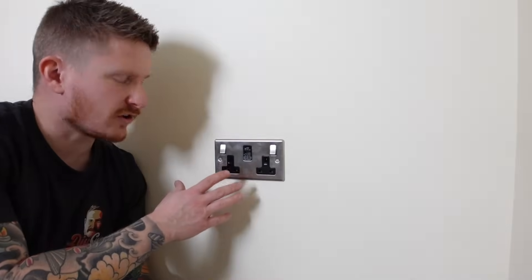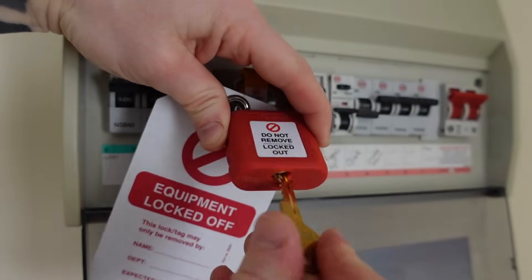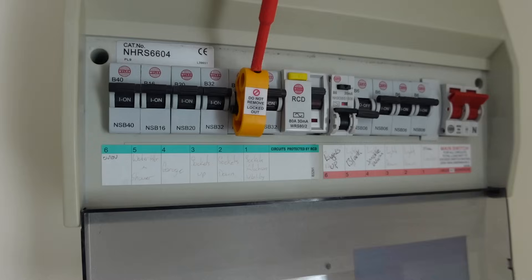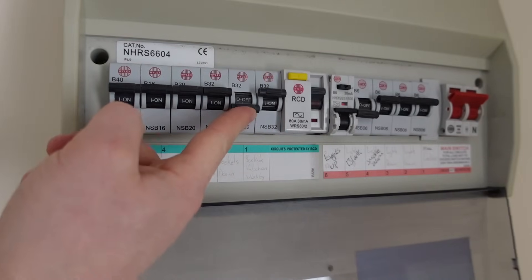So the socket's tight, it's nice and level. So let's go and turn the power back on and test the socket to check it works. So we can now remove the lockout kit from the MCB, just take the padlock off and then we'll be able to turn the MCB back on.